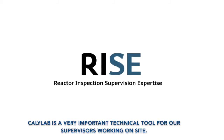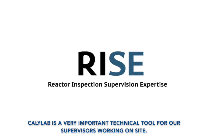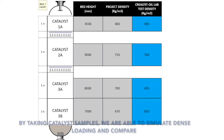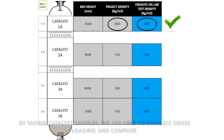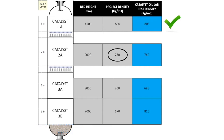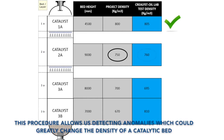CaliLab is a very important technical tool for our supervisors working on site. By taking catalyst samples, we are able to simulate dense loading and compare the density previously given on the loading diagram with the one we are detecting ourselves. This procedure allows us to detect anomalies which could greatly change the density of a catalytic bed.